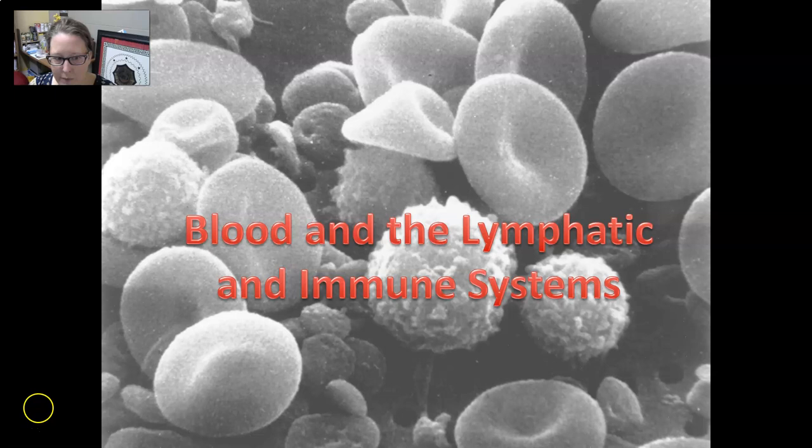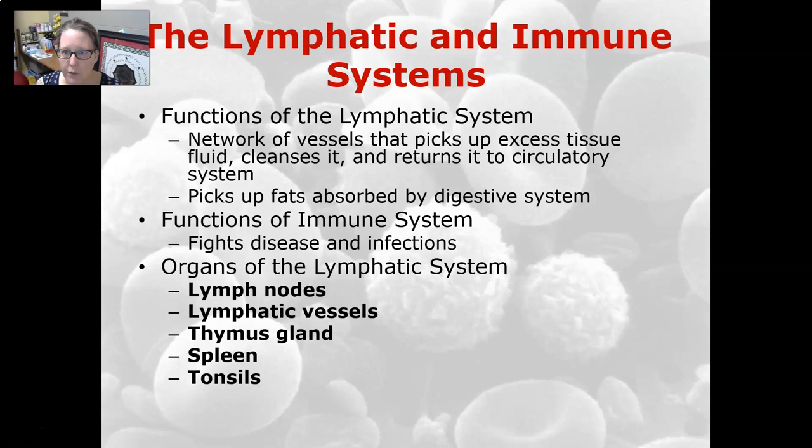This is Dr. A. We're going to do an anatomy and physiology review on the lymphatic and immune systems. As a quick review, the function of the lymphatic system is that it picks up excess tissue fluid, cleanses it, and returns it to the circulatory system. It also picks up the fats that are absorbed by the digestive system and ferries them into the circulatory system.